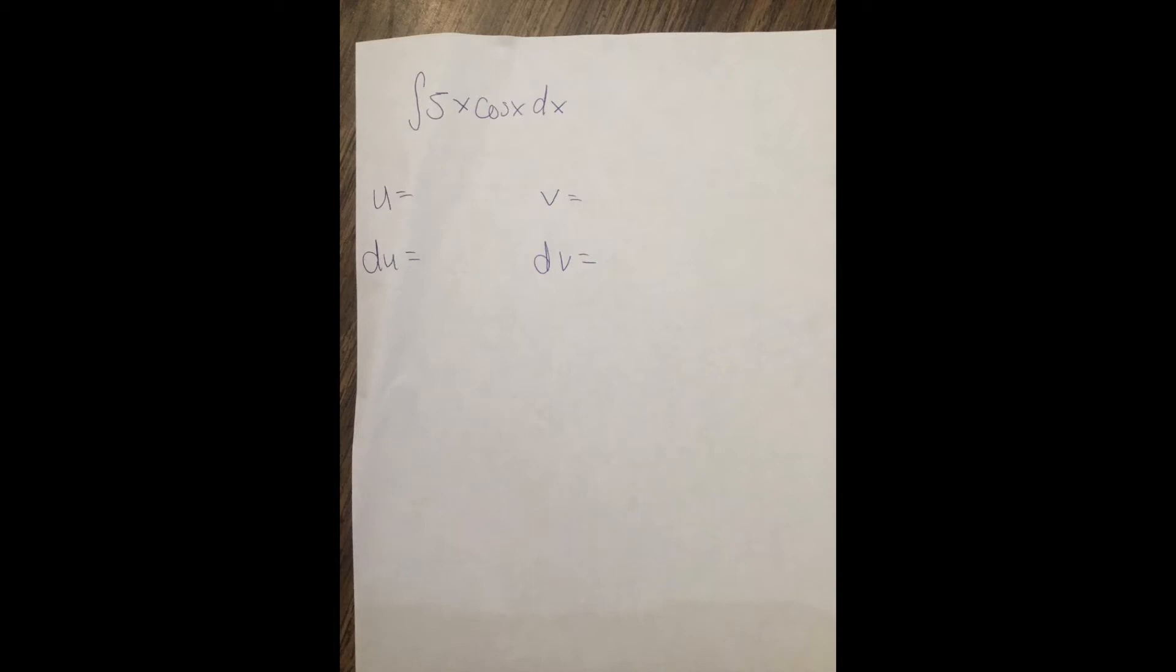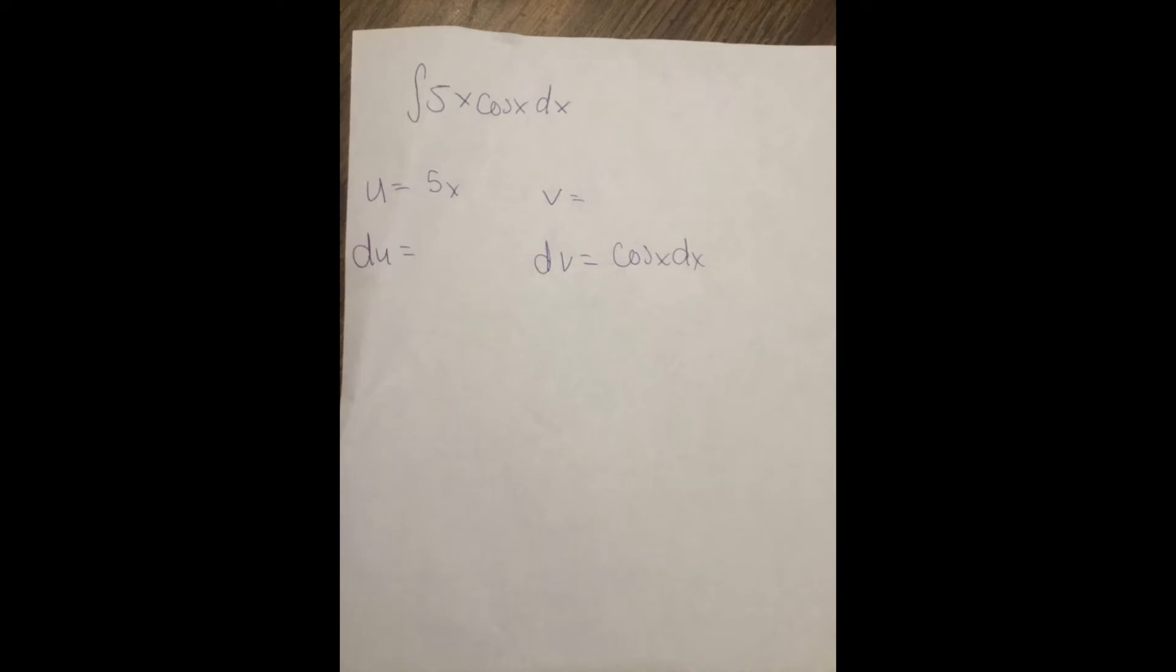It's a good guide to go by, though. So this time u is 5x, and that makes the dv everything else, which is cosine x dx.